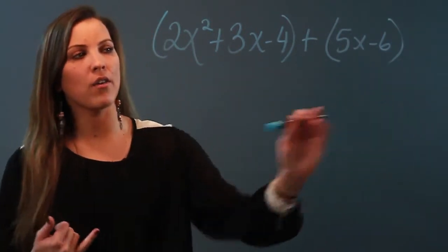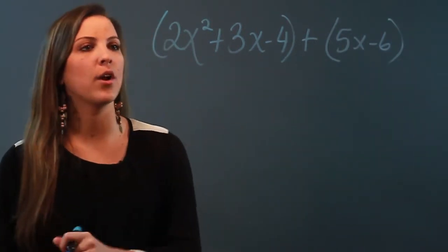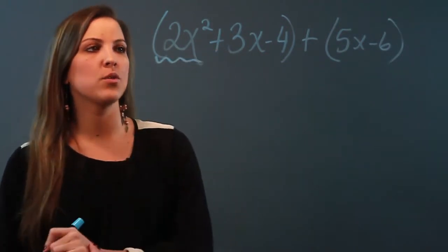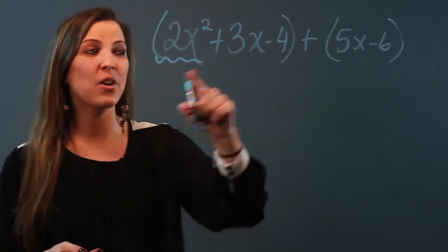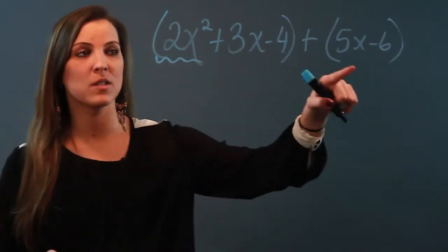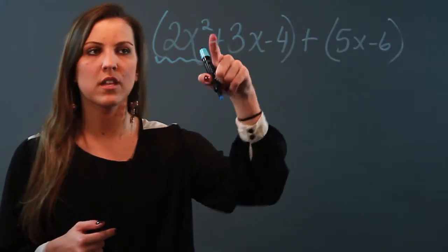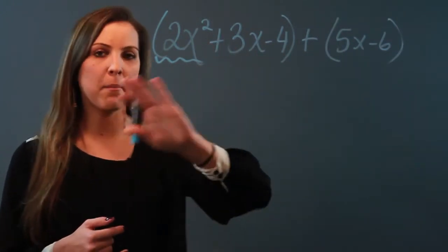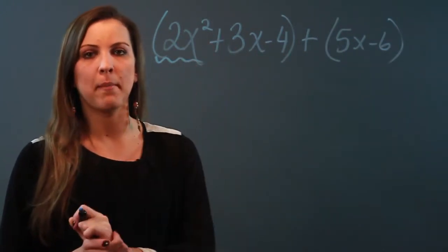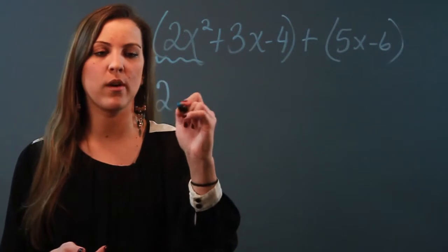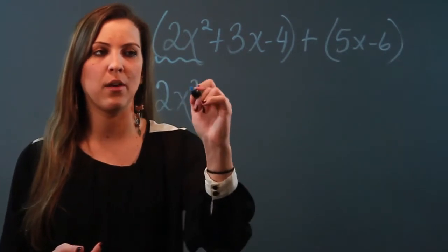So when we go to add all these terms together, I'm looking for like terms of 2x squared, and I don't see any, because while I see other x's, I don't see other x squareds. So that means I'm not going to be able to combine 2x squared with anything, so I'm going to go ahead and just bring it on down.